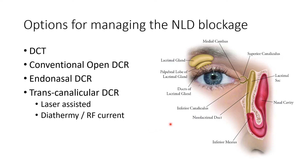More modern and least invasive methods of treating nasolacrimal duct blockage include trans-canalicular DCR, which can be laser-assisted, diathermy, or radio frequency current. The basic maneuver is that through the puncta and canaliculus a laser probe is advanced to the area where the lacrimal sac, nasal bone, and nasal mucosa lie. The laser or diathermy generates heat at the tip, disintegrating the tissue and creating an opening for fluid drainage into the nasal cavity.